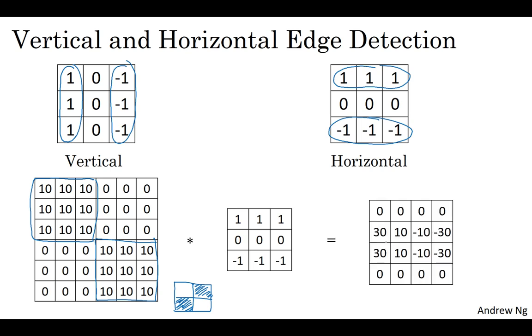Just to take a couple examples, this 30 here corresponds to this three by three region where indeed there are bright pixels on top and darker pixels on the bottom. It finds a strong positive edge there. And this negative 30 here corresponds to this region, which is actually brighter on the bottom and darker on top, so that is a negative edge in this example.